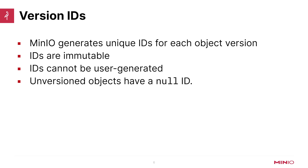After you turn on versioning, MinIO is going to generate unique IDs for each object version. The IDs themselves are immutable and cannot be user-generated — MinIO is going to manage all of that for you. If you have an unversioned object, it's going to have a version ID of null. And it turns out you can use the null ID to delete a versioned object in a versioned bucket — we'll come to that in a little bit.